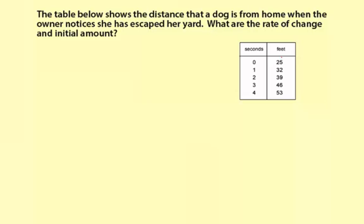So she sees the dog going down the street and she notices right away the dog is about 25 feet away. And then you can see as the time ticks up, 1, 2, 3, 4, the dog is moving further and further away. And it looks like a pretty good rate.